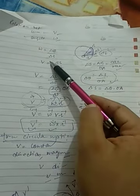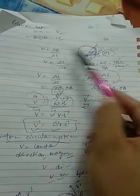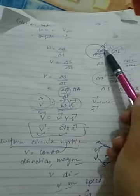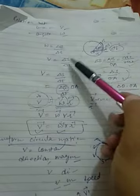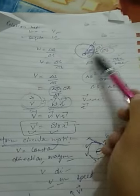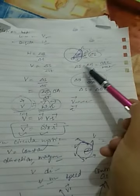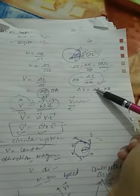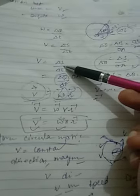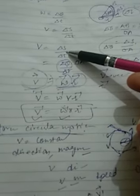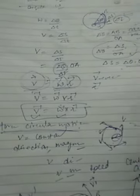This is the relation we derived between v and omega. Angular velocity is the rate of change of angular displacement, delta theta by delta t. Linear velocity is the rate of change of displacement, delta s by delta t. Using the angle equals arc upon radius formula, we found delta s, substituted it, and derived the new relation v⃗ = ω⃗ × r⃗.